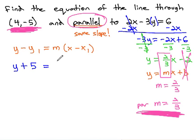equals m, our slope, which we found out was 2 thirds because it was parallel, the same slope, times x minus x1, which is 4.